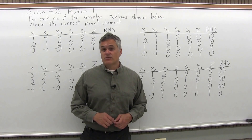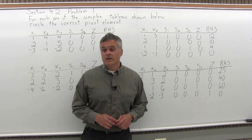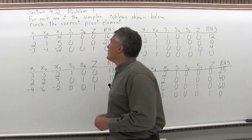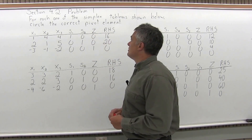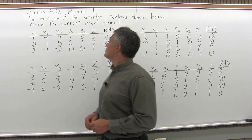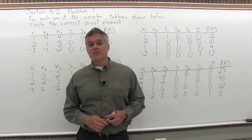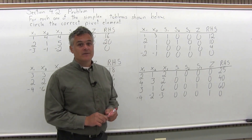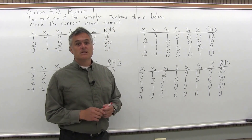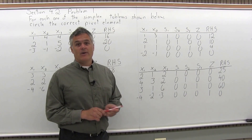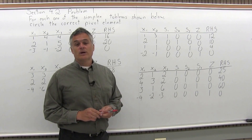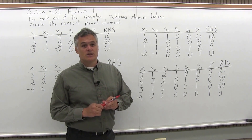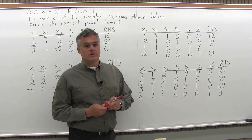This is Problem 1 from Section 4.2. It says for each one of the simplex tableaus shown below, circle the correct pivot element. There are five tableaus or matrices written out, and we'll find the correct pivot element for each one.